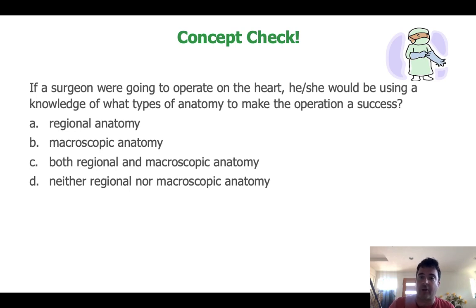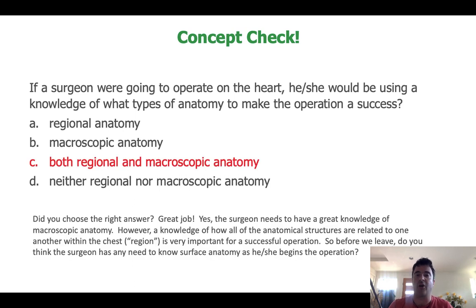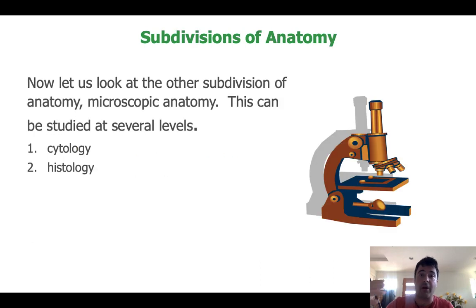Concept check: if a surgeon were going to operate on the heart, he or she would be using knowledge of what types of anatomy to make the operation a success? Give it a minute. Think about why that would be the case. Now think about the questions I've asked you that aren't on this slide. The other subdivision of anatomy is microscopic anatomy, and we can study it at several levels.